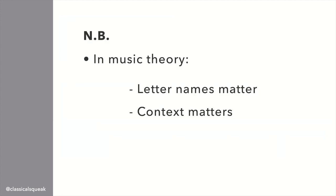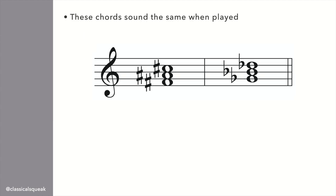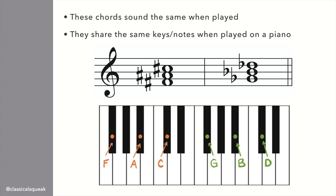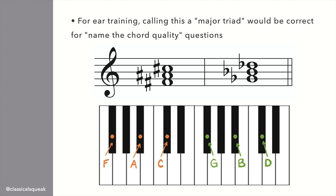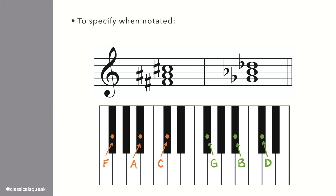In music theory, the letter names matter and context matters. Even though these two chords sound the same, and I'm playing the exact same keys on the piano, the way you notate the chord is different depending on the key and context. For ear training, you could simply say this is a major triad. For theory, though, it could be F sharp major or G flat major.